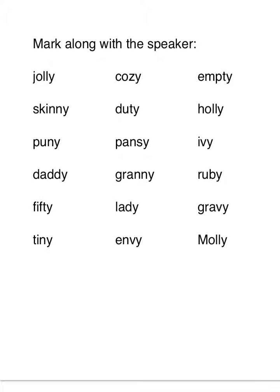On page two, follow along with me. First word: jolly. We have that bunny rabbit word — break up the two L's. We have a closed syllable and an open syllable, where the Y is long and the O is short. Cozy: co-zy — they're both open, so they both make the long vowel sound. Next word: empty — closed, open, short and long. Skinny — here's our bunny rabbit word, break up the two N's — closed and open, short and long.